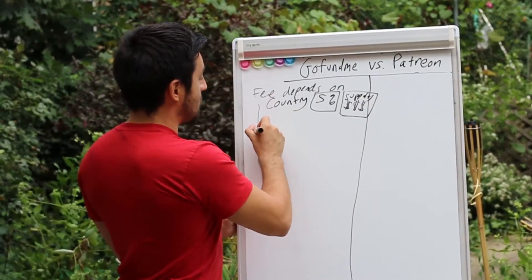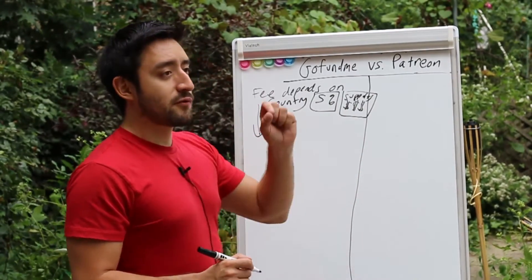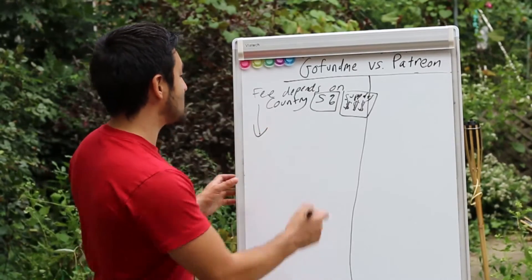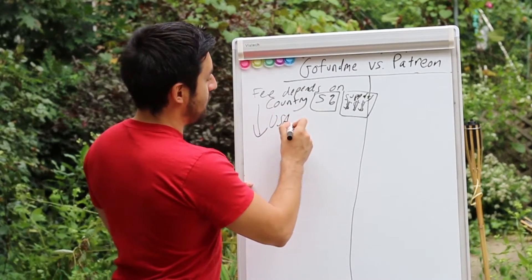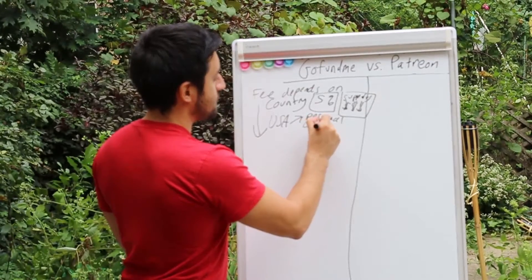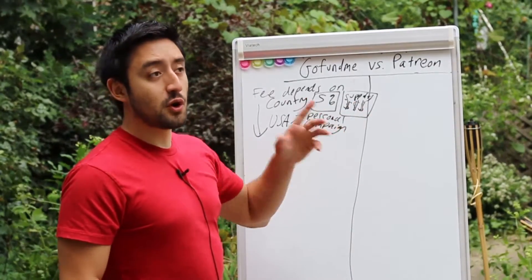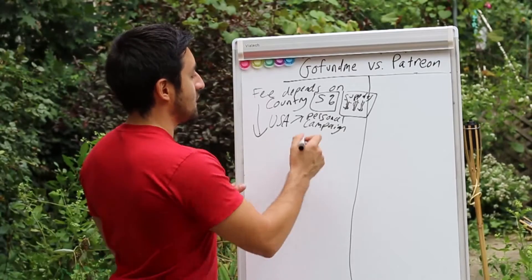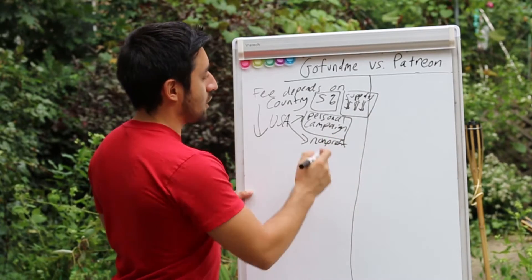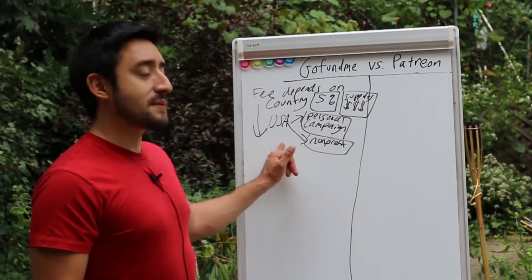Down below I'll include a link to the actual GoFundMe terms that will tell you which category you fall into. For the U.S., for personal campaigns, your donors will be asked to make a donation upon checkout. On the flip side, if you're doing a nonprofit campaign or cause, you'd be assessed the 5% fee.